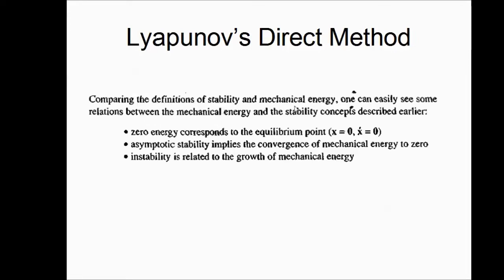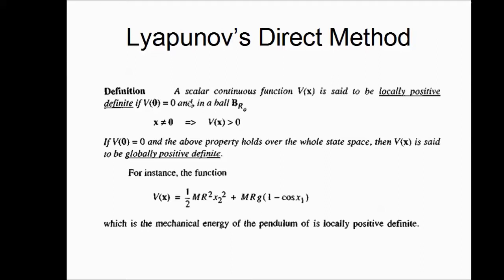By comparing the definitions of stability and mechanical energy, one can see clear relations: zero energy corresponds to the equilibrium point; asymptotic stability implies convergence of mechanical energy to zero; and instability is related to growth of mechanical energy. A scalar function V(x) is said to be locally positive definite if V(0) equals zero and, in a ball of radius r₀, V(x) is strictly positive at non-zero arguments. If this property holds over the whole state space, then V(x) is said to be globally positive definite.